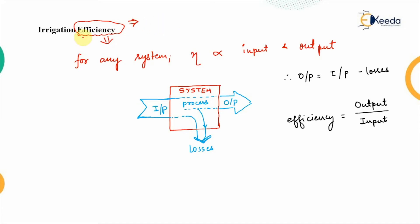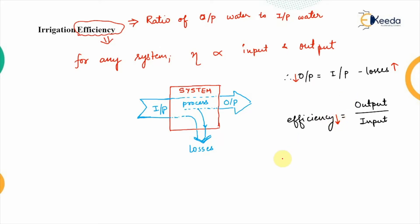Irrigation efficiency is defined as the ratio of the output water to the input water. If losses are more, the output value will be lesser, and therefore the efficiency will be lesser. So efficiency and losses are inversely related: more losses means lesser efficiency, and lesser losses means more efficiency.